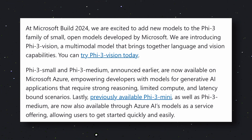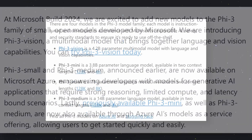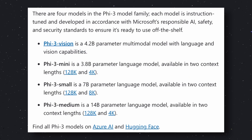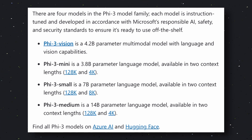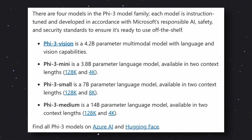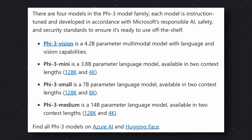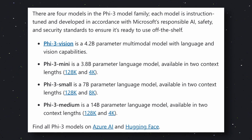A few days ago, Microsoft had launched their three smallest open-source models named Phi-3. They were Phi-3 Mini, a 3.8 billion parameter model; Phi-3 Small, a 7 billion parameter model; and Phi-3 Medium, a 14 billion parameter model. I have a video about all these models, so you can check them out on my channel if needed. But now they have added a new model to this family, and that's called Phi-3 Vision.